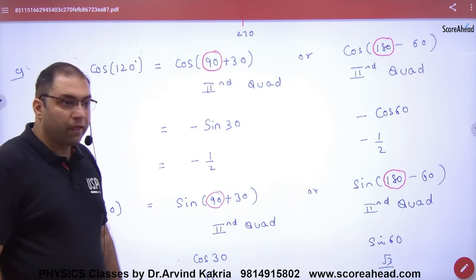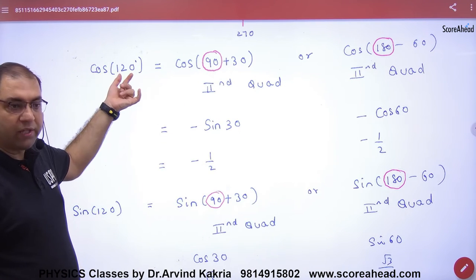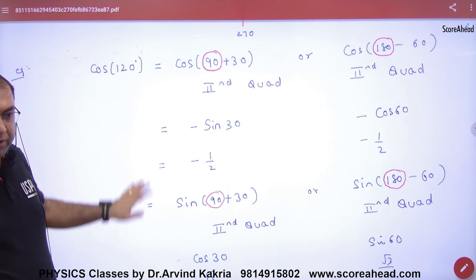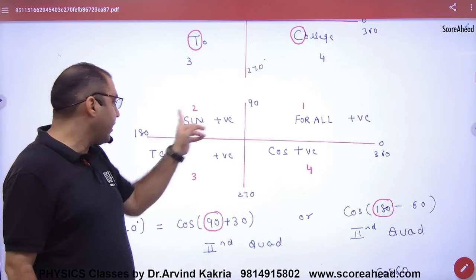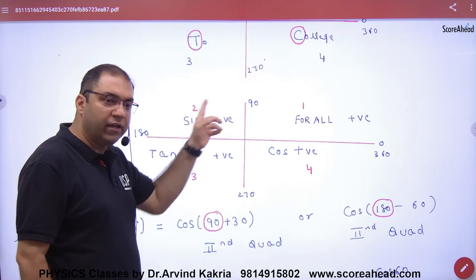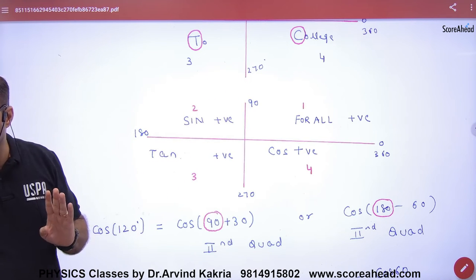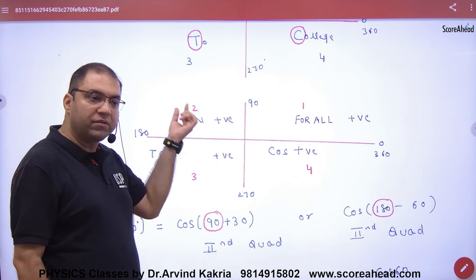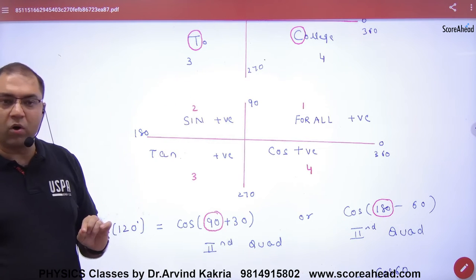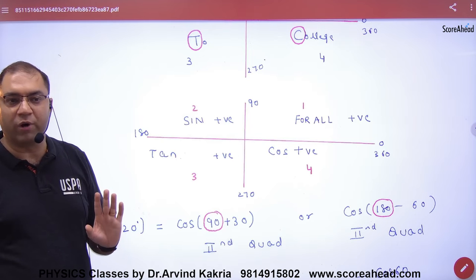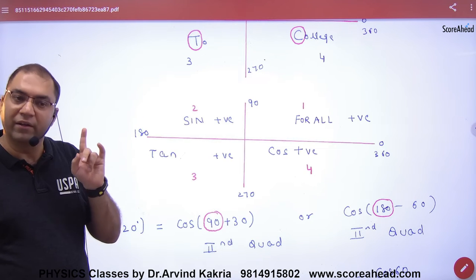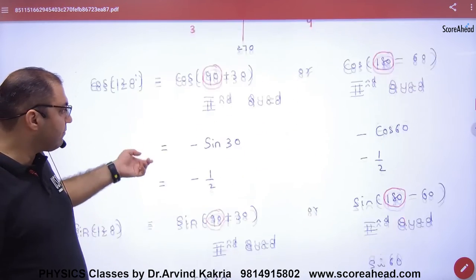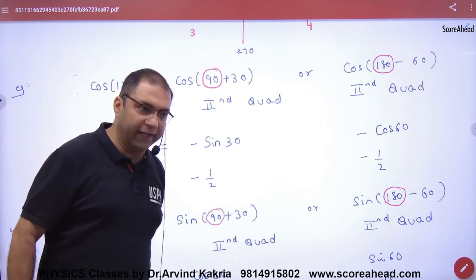Looking at cos 120: first, let's decide which quadrant 120 belongs to. It lies between 90 and 180, so it is the second quadrant. In the second quadrant, sin 120 is positive but cos 120 is negative. So our answer will be negative — write a minus sign first.